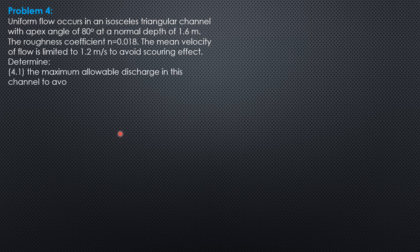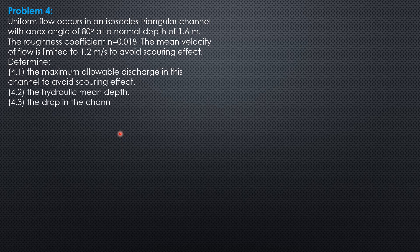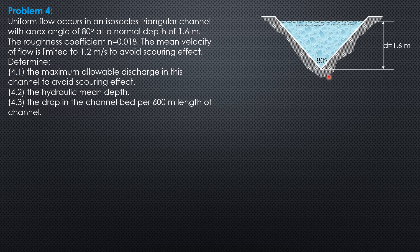The mean velocity of flow is limited to 1.2 meters per second to avoid scouring effect. So determine the maximum allowable discharge in this channel to avoid scouring effect, the hydraulic mean depth, and the drop in the channel bed per 600 meters length of channel.